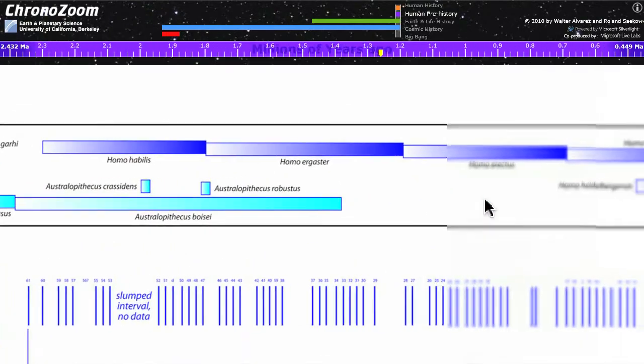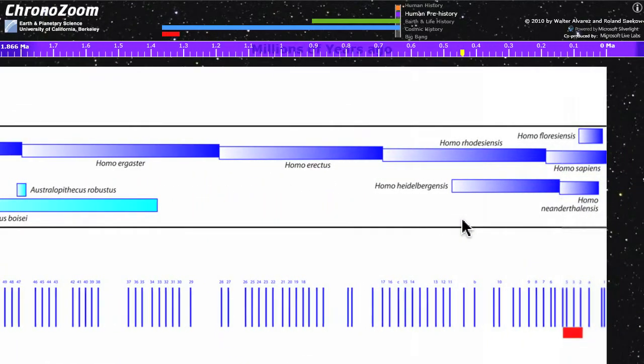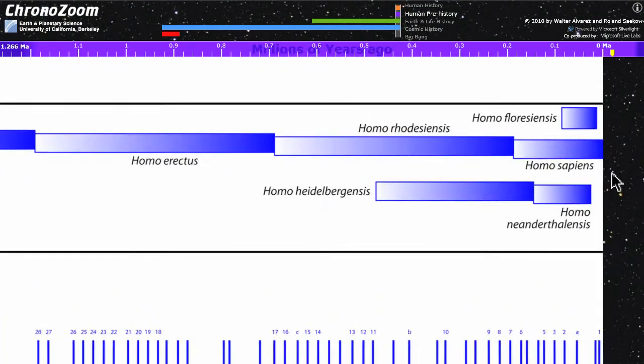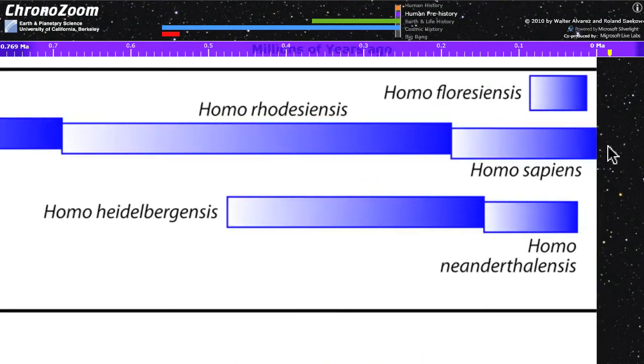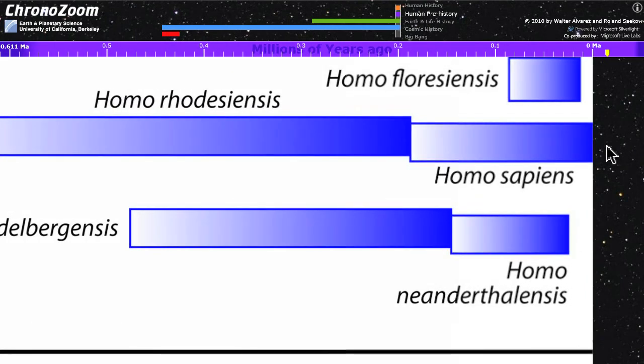Going all the way to the right you can see Neanderthal here. By the way, there was a wonderful article in Science just last week in May of 2010 which reported the genome for Homo Neanderthalensis. And then finally here is Homo sapiens, and that's us.